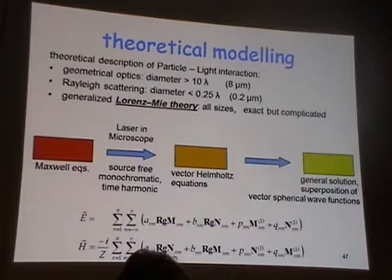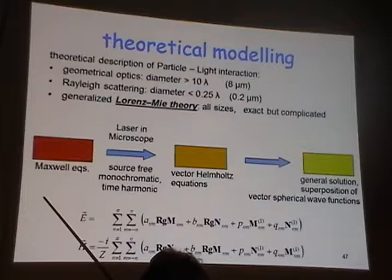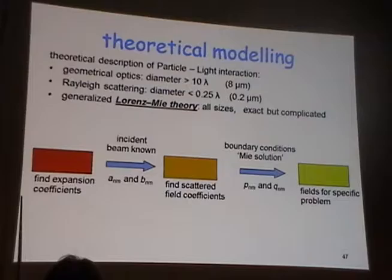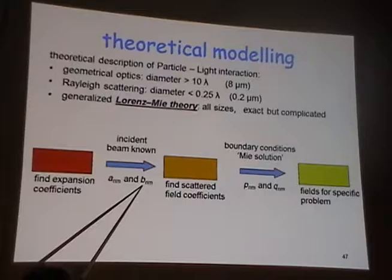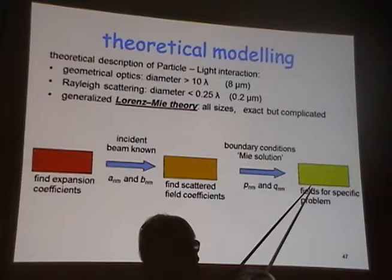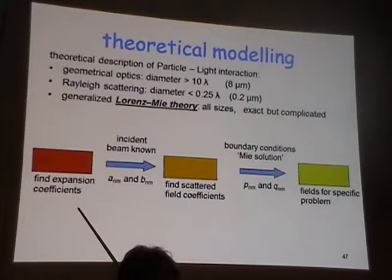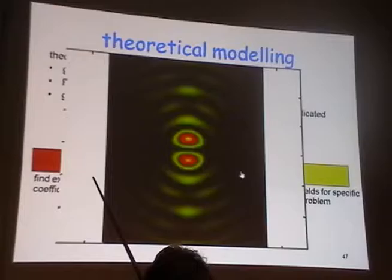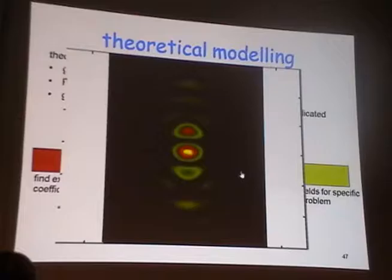This is my Helmholtz equation, and I characterize both the E and B fields with the parameters needed for the proper scattering calculation. I find expansion coefficients: incident field coefficients A and B, and scattering field coefficients P and Q. Then with boundary conditions for these solutions I find the field for the specific problem — a specific type of beam, or particle, or both. Here is one such calculation done.